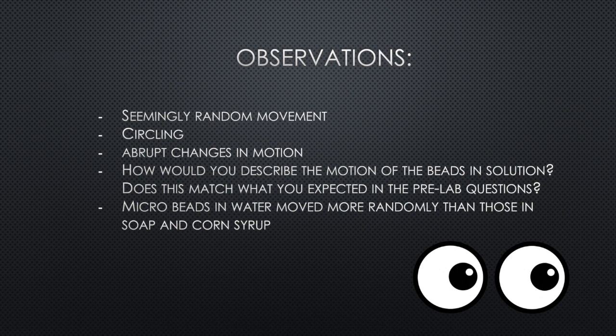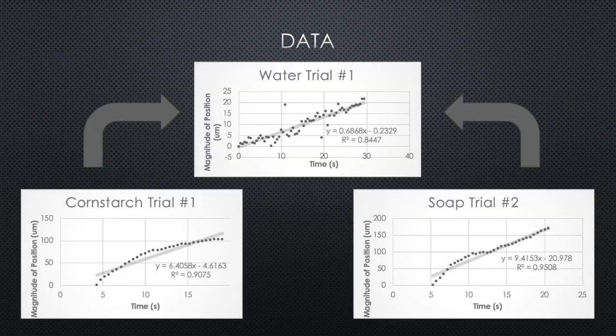The movement of the beads were unpredictable and abrupt. Some beads followed a rough circling pattern, while others seemed to be sporadically oscillating. The data demonstrated a slower average velocity of water in comparison to soap and corn syrup, which is contrary to our prediction. Water had the most inconsistent movement of the three and resulted in a trendline with an r-squared value of 0.84, while soap and corn syrup had r-squared values above 0.9. It should be noted that the scale difference in the graphs accentuates the random movement of water.